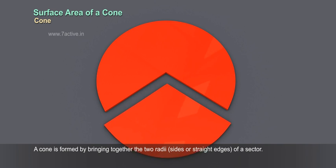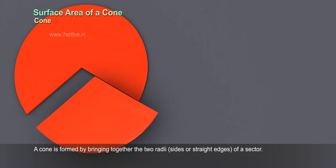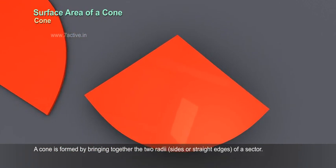A cone is formed by bringing together the two radii, sides or straight edges of a sector, so that they coincide with each other.